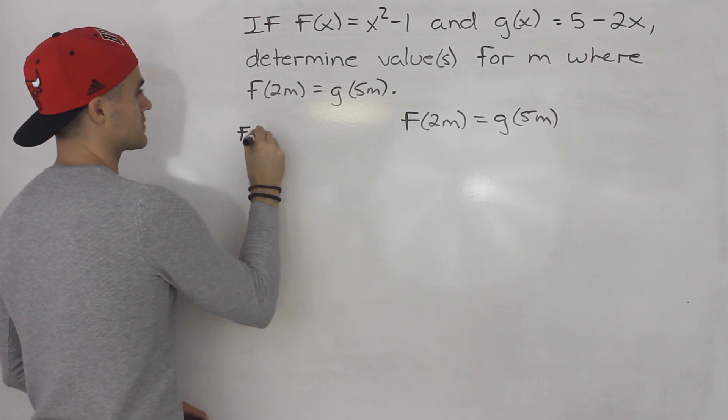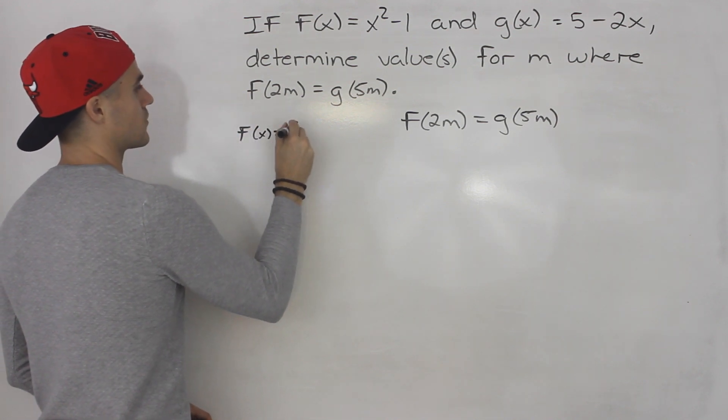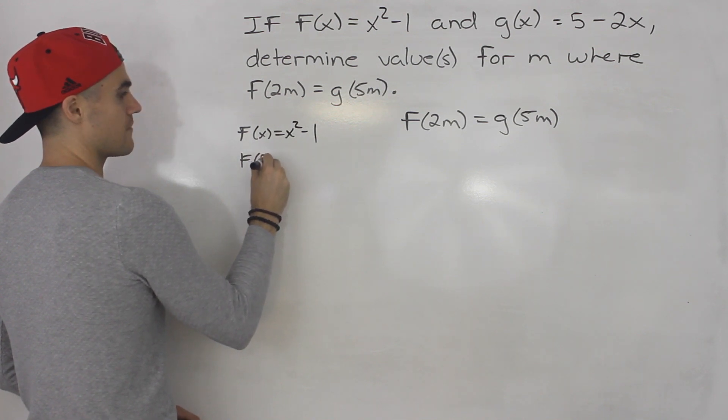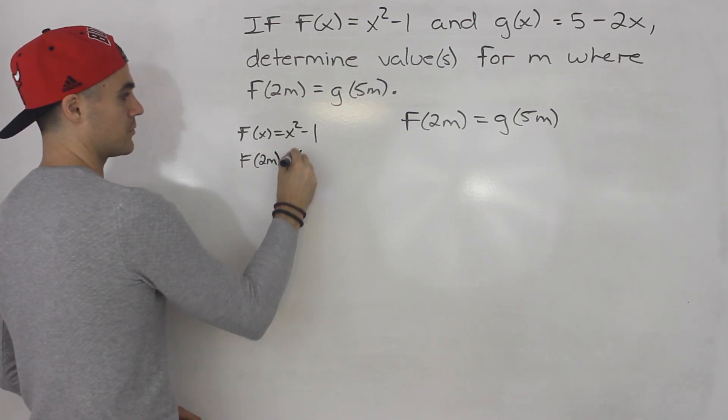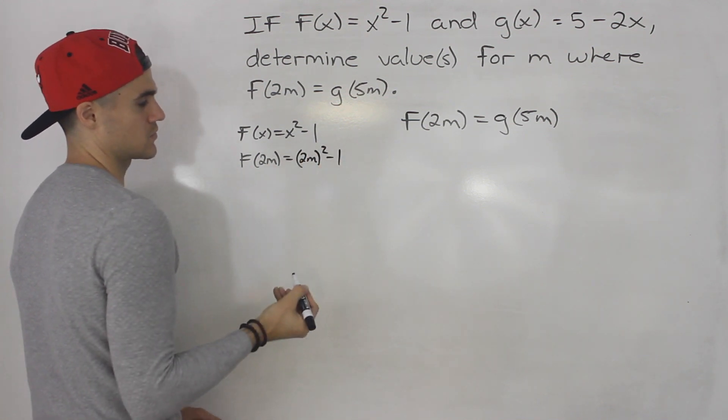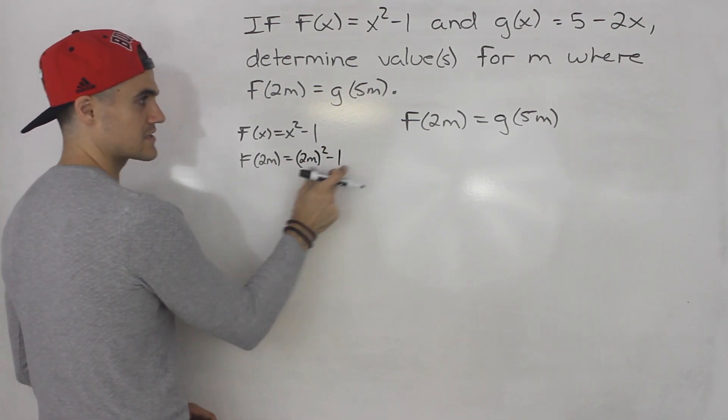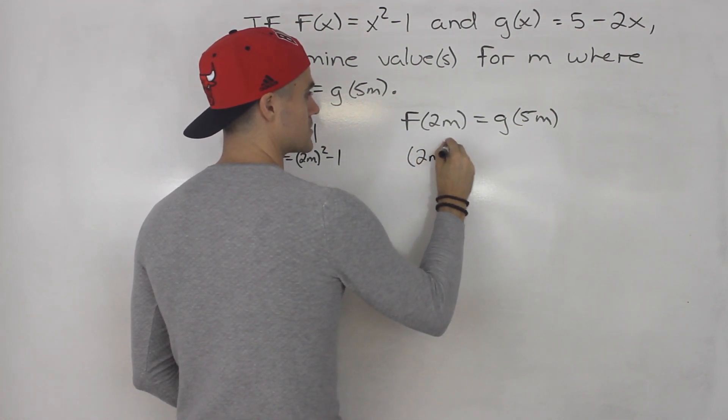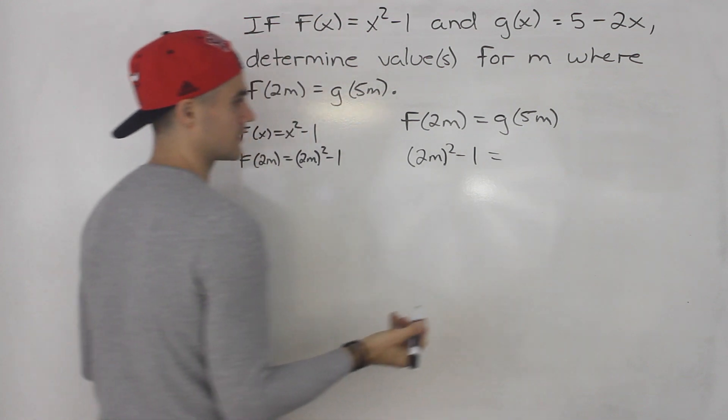f(x) is x² - 1. So that means f(2m), we're going to plug in 2m for x in brackets. We're going to have (2m)² - 1. We can plug in this expression for f(2m) here, so we'd have (2m)² - 1.